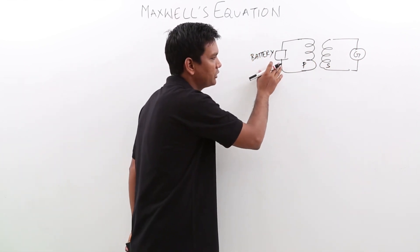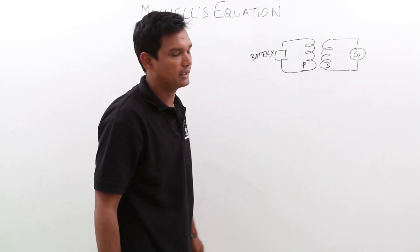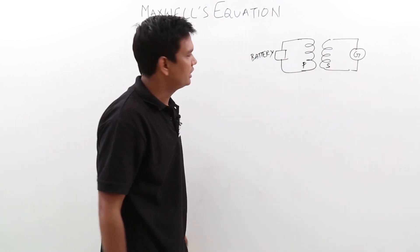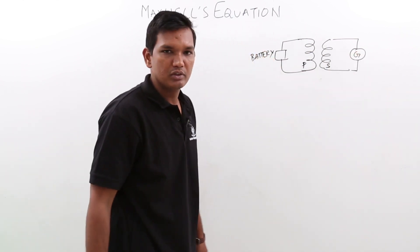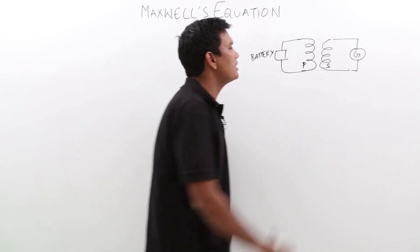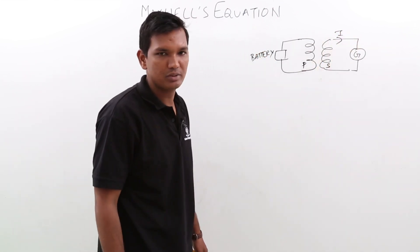He has connected a battery to the primary coil and he has connected a galvanometer in the secondary coil. What he observed is, when he has connected the battery here, there was a deflection in the galvanometer. It means there is some current flowing in this coil. If the deflection is happening, it means there has to be a current flowing there.